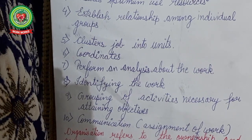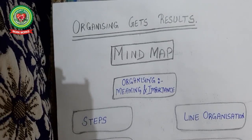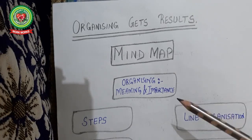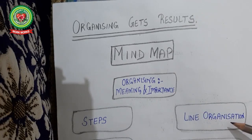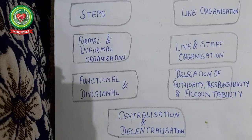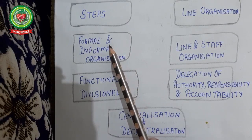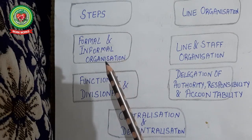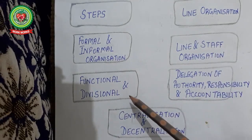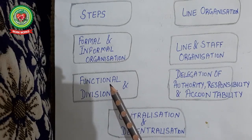I hope all of you have solved your worksheets thoroughly and face no problems, as you are in touch with the videos. We know that organizing gets results. We have already covered the meaning and steps of organizing, line organization, the process of organizing, and formal versus informal organization. Today we start with functional organization, and this week we will proceed with further topics.